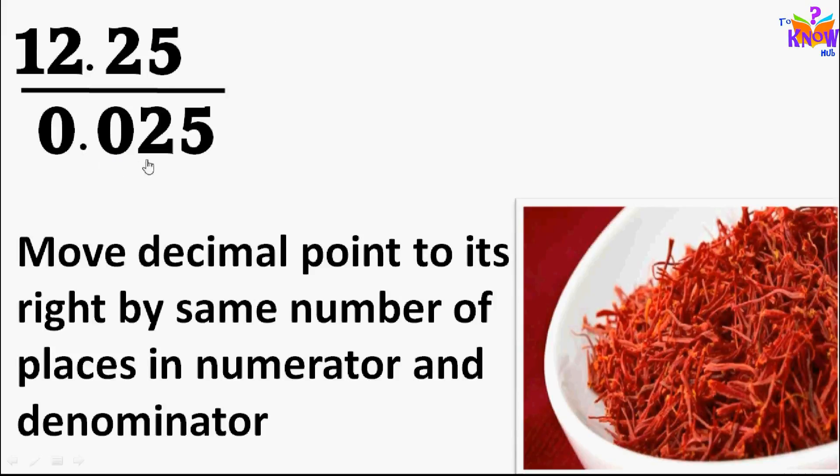So basically, if we move decimal by three spaces in divisor, we do same in the dividend. But there is only two decimal places in the dividend. We can add a zero at the end after decimal. 12.25 is same as 12.250. This zero doesn't matter. So we multiply up and down by thousand, means we move decimal by three spaces in both numerator and denominator.